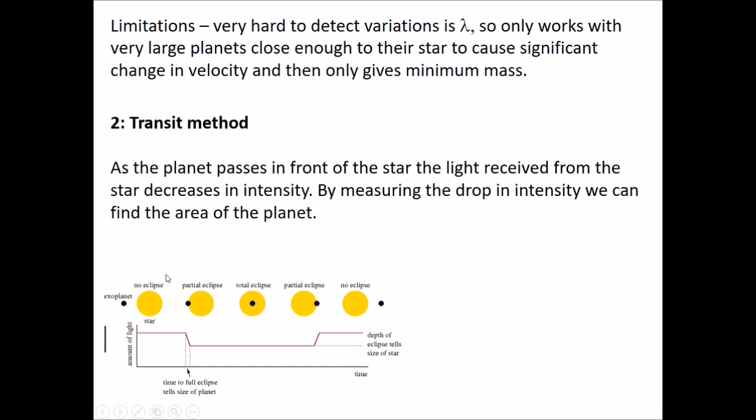Our second method is the transit method. Here's a picture of the transit method - the planet goes across the star. As it goes across the star, the amount of light that we see from the star decreases and we get these little dips. This planet going across the star is called a transit. Again, it only works if we're in the same plane, but we know we're in the same plane because otherwise there wouldn't be an eclipse. By measuring the drop in intensity, we can find the area of the planet.